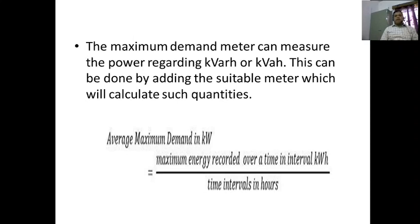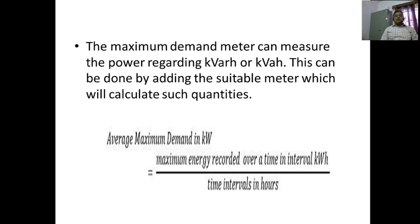The maximum demand meter can measure power regarding KVARH or KVAH also, whereas the energy meter measures KWH. This can be done by adding a suitable meter which will calculate such quantities. The average maximum demand in kilowatts equals the maximum energy recorded over a time interval divided by the time interval in hours.